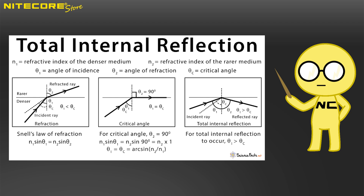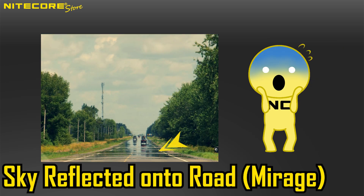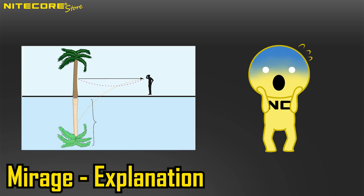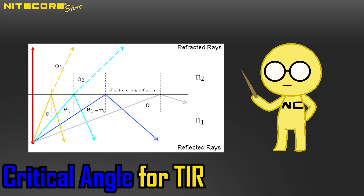The basic principle of total internal reflection works thusly. Due to a phenomenon in physics, when light or any wave — this would work with sound waves or microwaves even — travels from a medium with a higher density to a lower density, such as water to air, there is a very specific angle called a critical angle where instead of refracting, it will completely reflect the wave back.